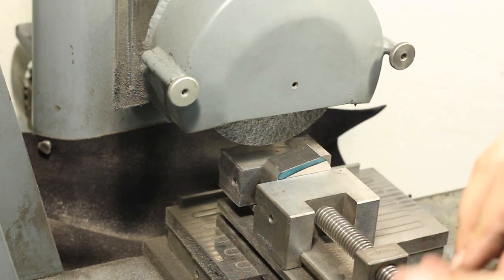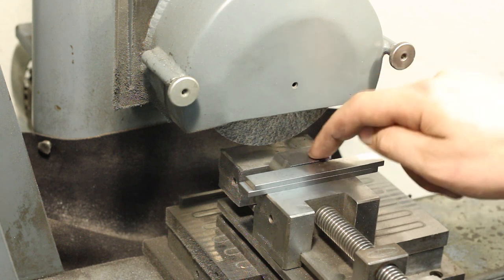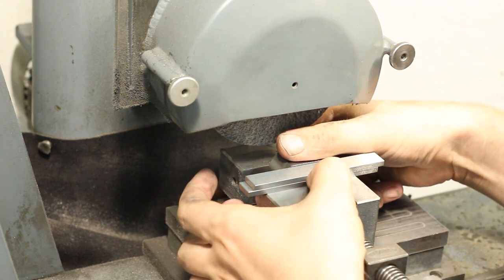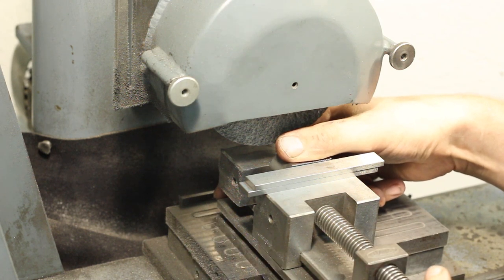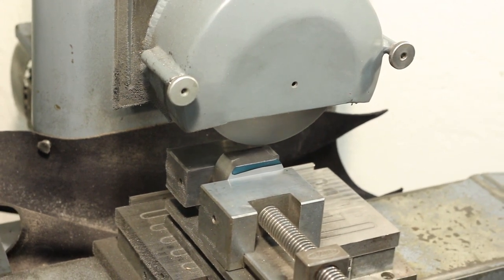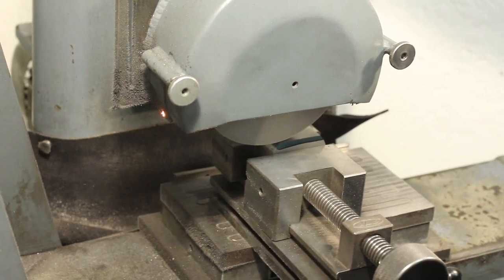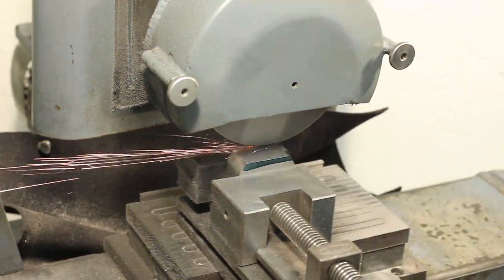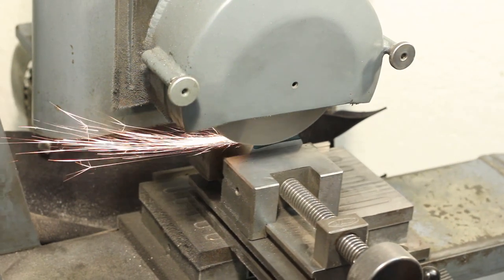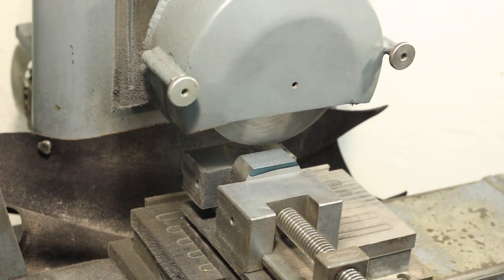To align the parts, I just take a stack of parallels that is approximately the same height as the part above the vise. Then I get down and I sight above the parallel and get the part relatively parallel to the parallels.